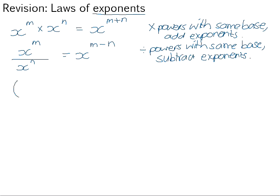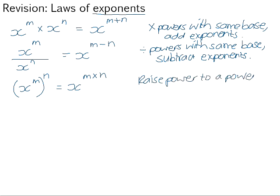When we raise a power to a power — so if we take x to the m as a power and raise it to a further power — we multiply the exponents. So that will be x to the power of m times n. When we're raising a power to a power, we multiply the exponents.